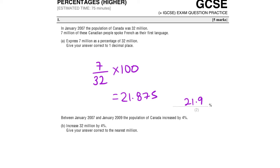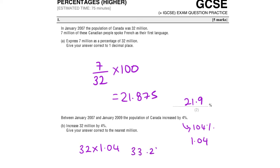Between January 2007 and January 2009, the population of Canada increased by 4%. Increase 32 million by 4%. An increase of 4% means we're actually at 104%, so as a multiplier that's 1.04. So 32 times 1.04 gives me 33.28, which correct to the nearest million is 33 million.